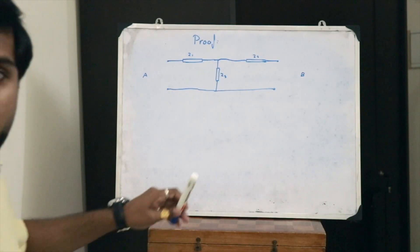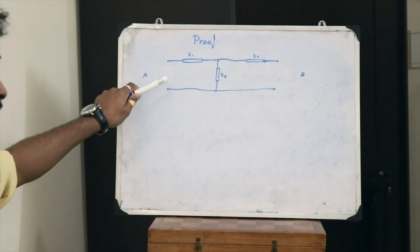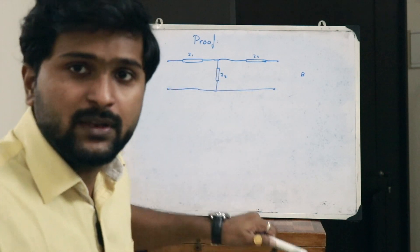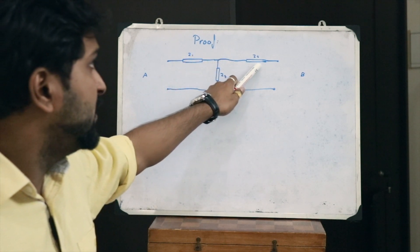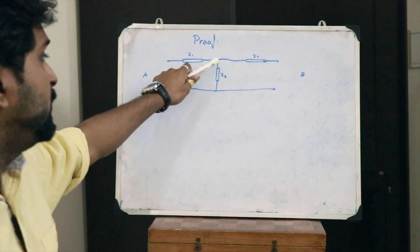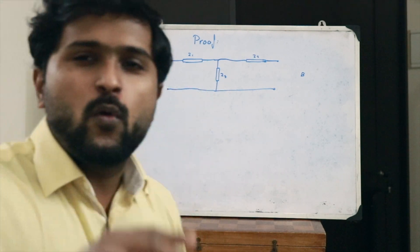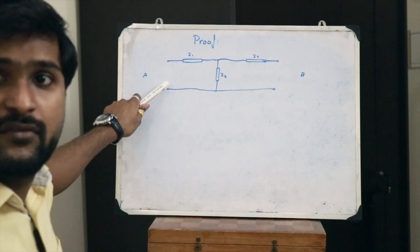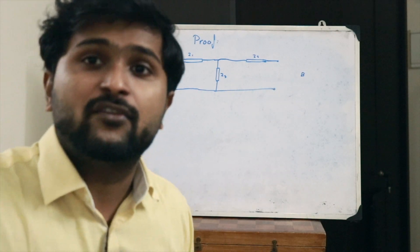Now let's get into the proof of the reciprocity theorem. Let us consider this antenna setup — these are the terminals of antenna A and these are the terminals of antenna B. Let Z1 be the impedance of antenna A, Z2 be the impedance of antenna B, and Z3 be the impedance of the medium between the two antennas. The first case is when we apply an EMF at the terminals of antenna A and measure a particular current at the terminals of antenna B.